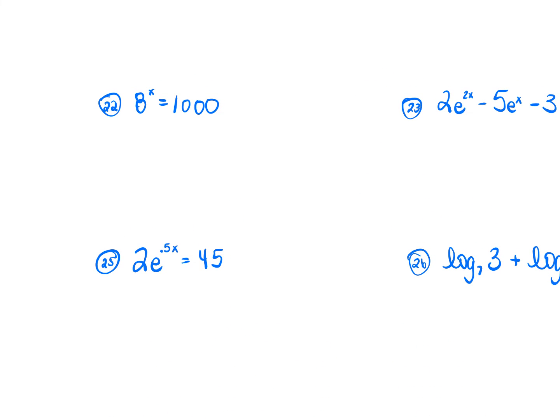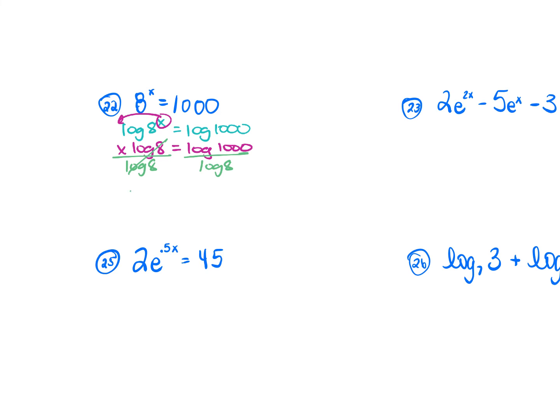For number 22: 8^x = 1000. You cannot write 1000 as a power of 8, so take the log of both sides: log(8^x) = log(1000). Bring x to the front: x·log(8) = log(1000). Divide each side by log(8). Using your calculator: log(1000) ÷ log(8) ≈ 3.322.